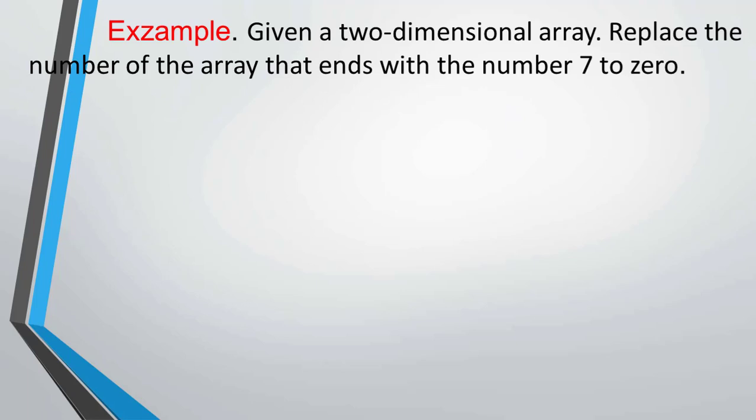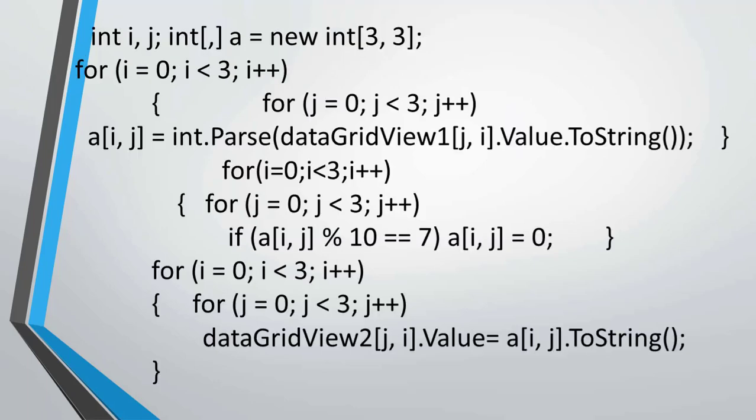Next, we look at the following example. Given a two-dimensional array, replace the elements of the array — that is, replace the number 7 in the array with zero. You can see on the screen the code for this problem.